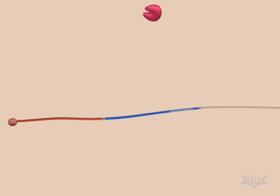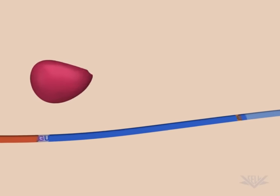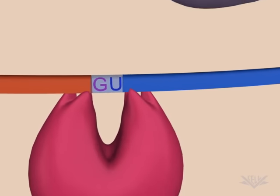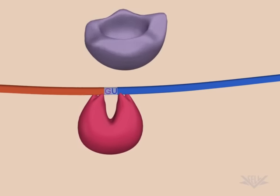Splicing is mediated by the spliceosome, which consists of several protein RNA complexes. The first step involves two complexes that bind near the GU sequence.